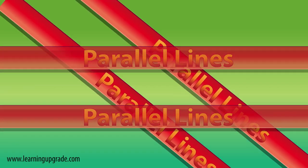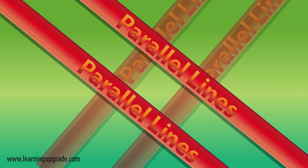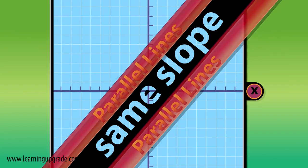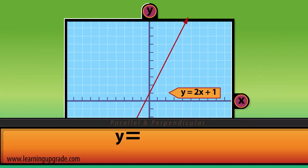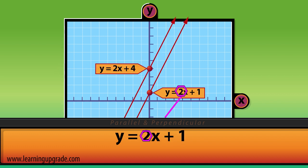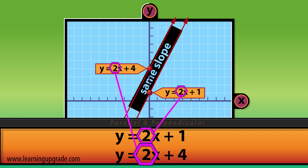Parallel lines never cross. Parallel lines have the same slope. Y equals 2x plus 1 is parallel to y equals 2x plus 4, as they have the same slope.